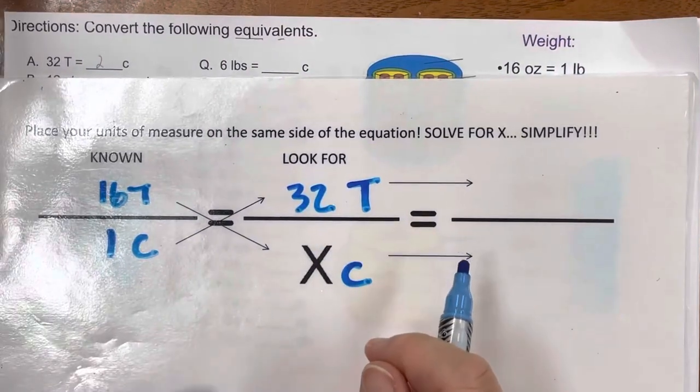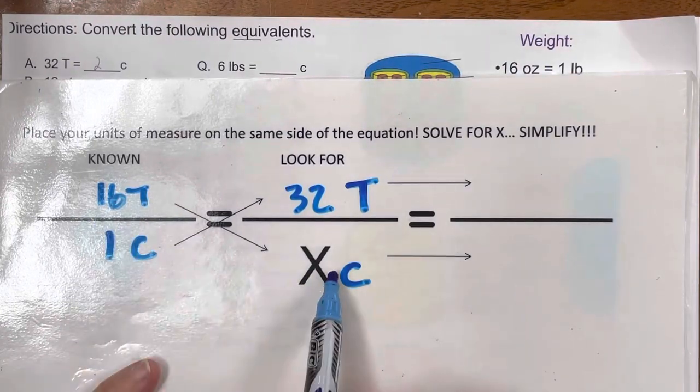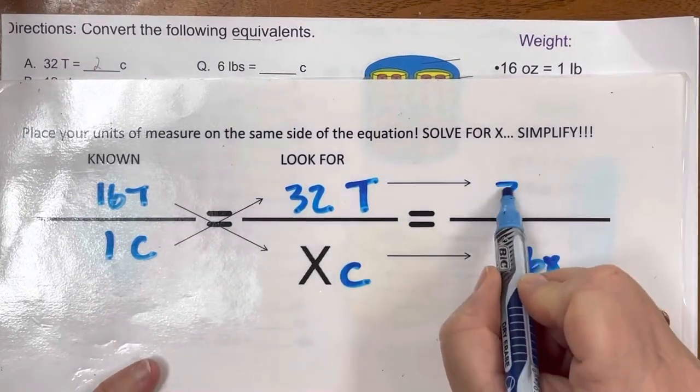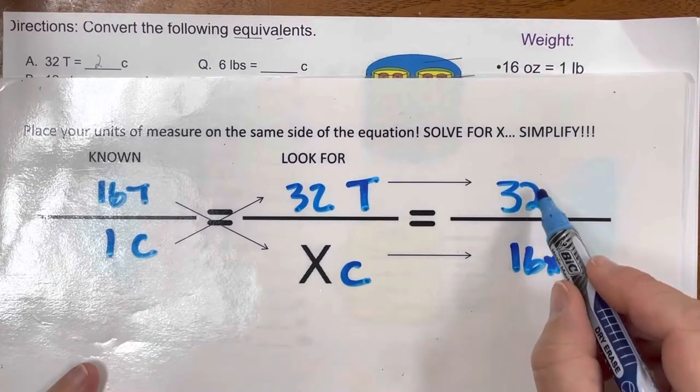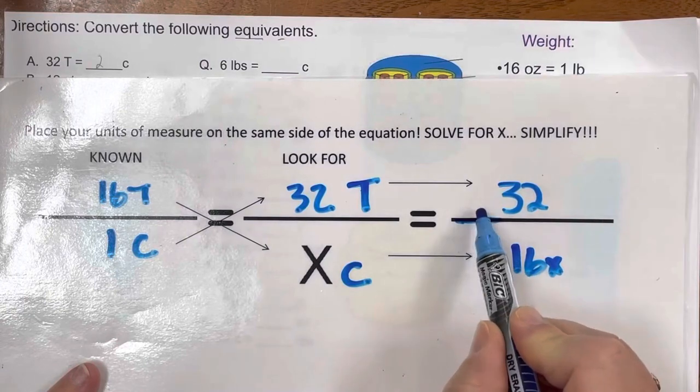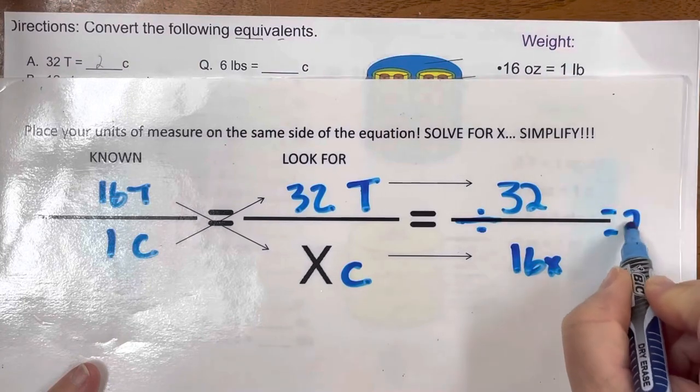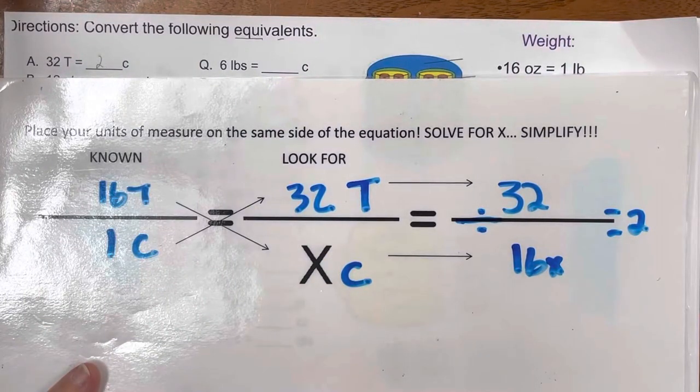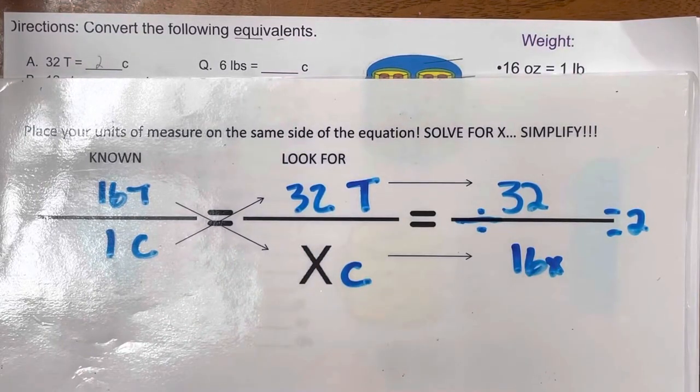So now I'm going to cross-multiply. So 16 times x would be 16x. 1 times 32 would be 32. And then I solve for x, which is 32 divided by 16. This line is a division. Divided by 16, which gives me 2. And that's the answer, 2 cups. So that is a way that you can use this formula.